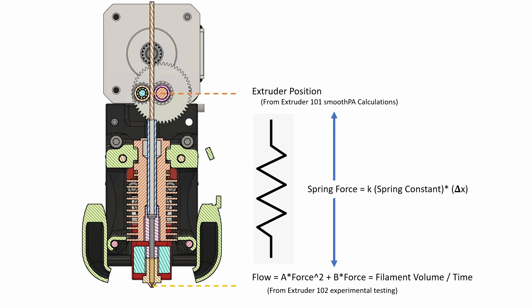As long as the extruder can sustain that force that it is experiencing, the spring will exert the same force down onto the melt zone with the melted plastic, and that force can then be converted into flow based on the equation we defined last week.